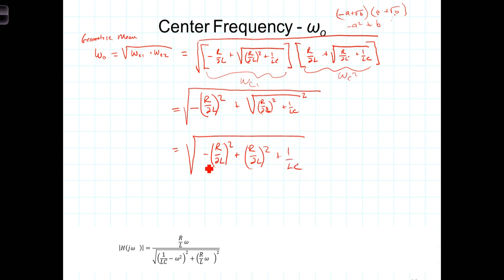So you have a negative term here, positive term, those add to zero, and we're left with then that omega-0 is equal to the square root of 1 over LC.